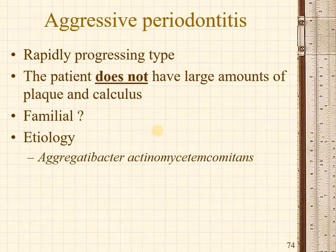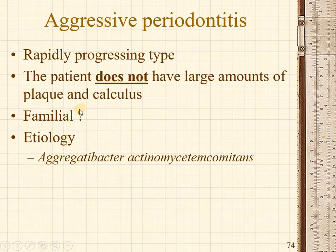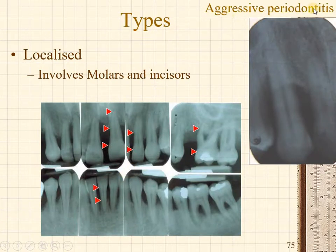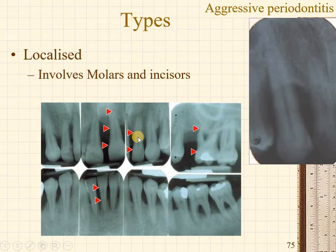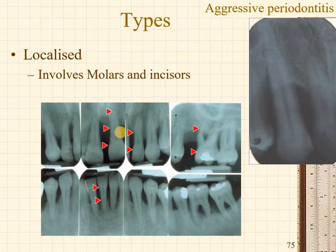Another variant is aggressive periodontitis — a rapidly progressing type where, surprisingly, the patient does not have large amounts of plaque and calculus. A familial origin has been proposed, and the predominant etiology is Aggregatibacter actinomycetemcomitans. The characteristic feature is typical anterior and posterior arc-shaped bone loss — bone loss in the region of the first molars and central incisors. This is theorized to occur because the first molars and central incisors are the first teeth to erupt, having been present longest in the oral cavity.